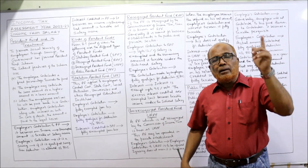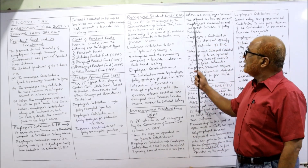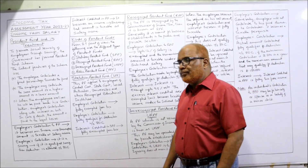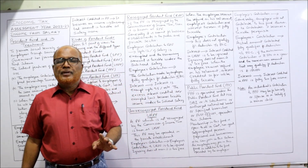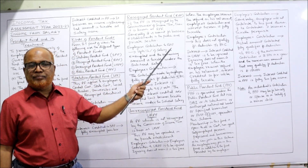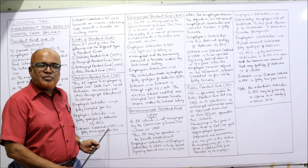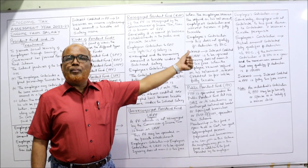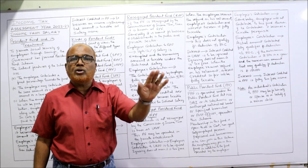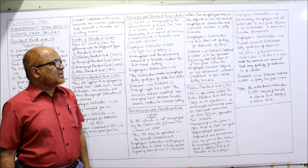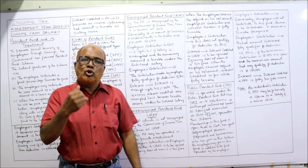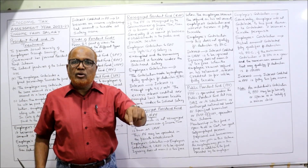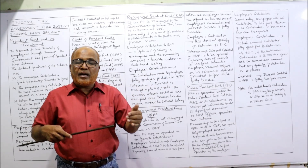When the employee receives the refund on retirement, interest on employer's contribution is taxable. Employee's contribution to URPF will not qualify for deduction under Section 80C — unlike SPF and RPF, whose employee contributions fully qualify for deduction under Section 80C. Interest credited in URPF is also ignored currently, but again ignoring does not mean it is tax free; at the time of retirement when you get back the interest, it will be taxable.